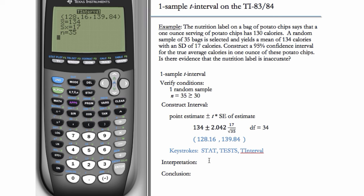Great. So our interpretation then is we are 95% confident that the true average calories in 1 ounce of these chips is between these two numbers, 128.16 and 139.84.